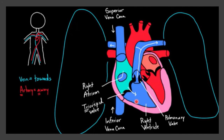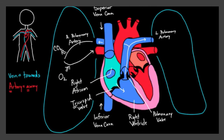After the blood goes into the right ventricle, the pulmonary valve opens up and through the pulmonary artery, the deoxygenated blood goes to the lungs for oxygenation. See, here is the right lung and here is the left lung. The pulmonary artery is the only artery which carries deoxygenated blood, whereas all other arteries carry oxygenated blood.